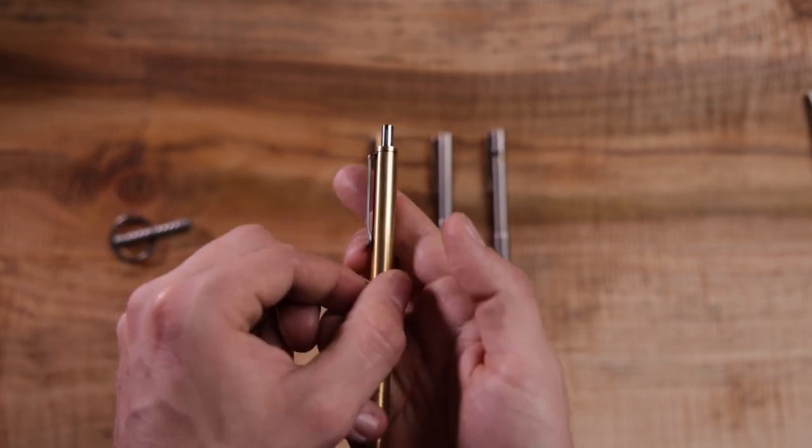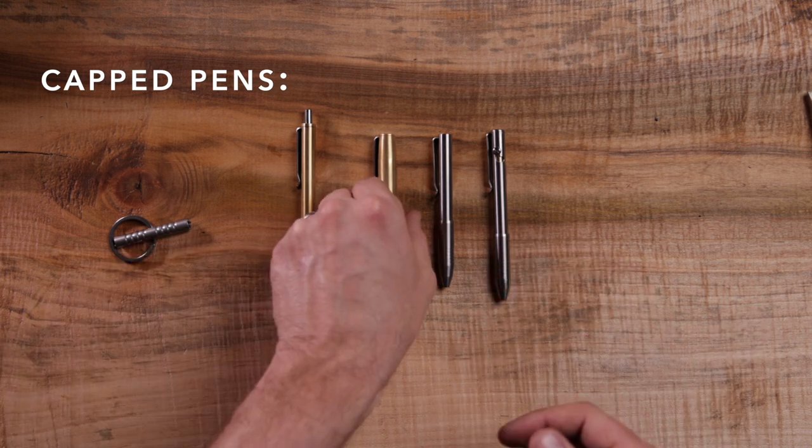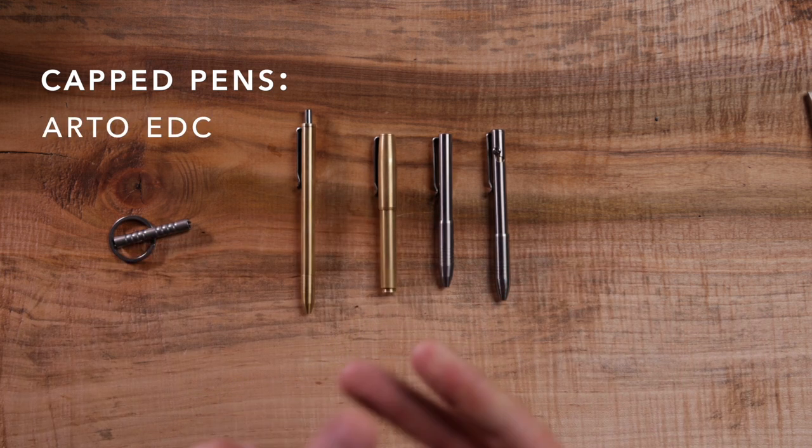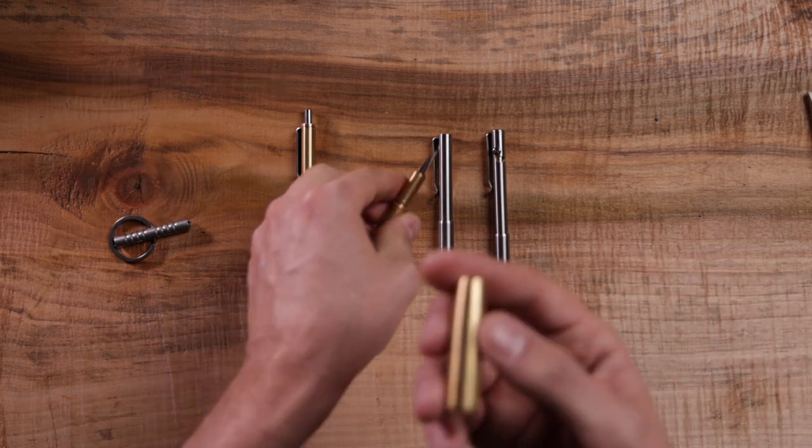That's for all of the click pens. Anything that is a capped pen, which is going to be the Arto EDC, the Fountain EDC, and the Ultra, they're all very similar. This is a Fountain EDC.